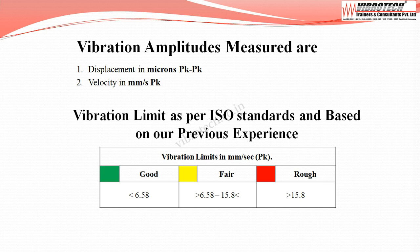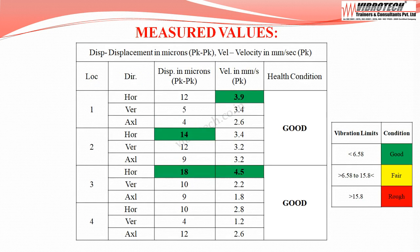Vibration data are collected in terms of displacement in microns peak to peak, and velocity in millimeters per second peak. As per ISO standard and previous experience: when velocity falls below 6.58 mm/s peak it is considered good; between 6.58 to 15.8 mm/s peak is fair; above 15.8 mm/s peak is considered rough.